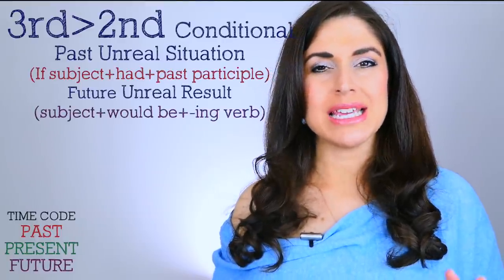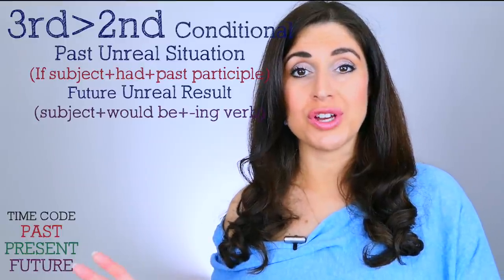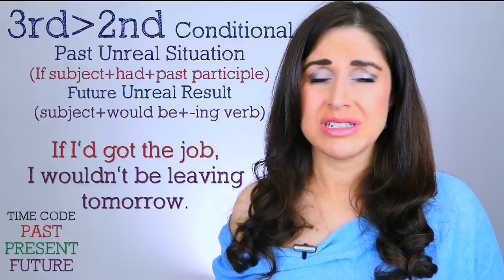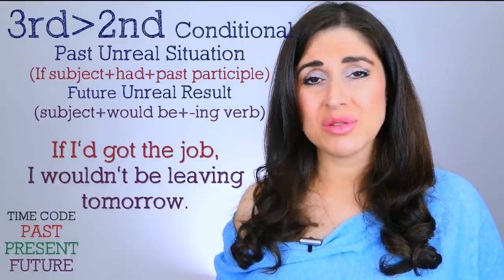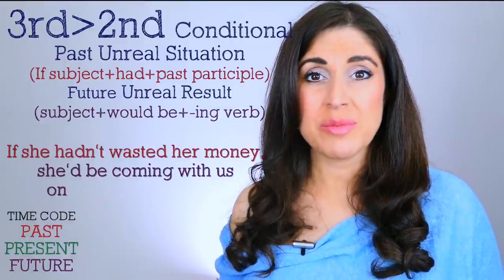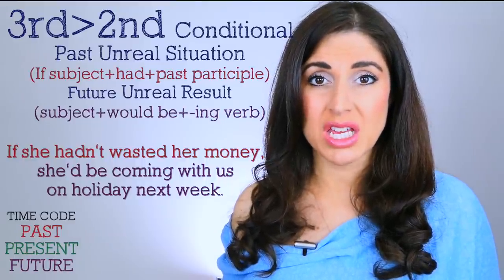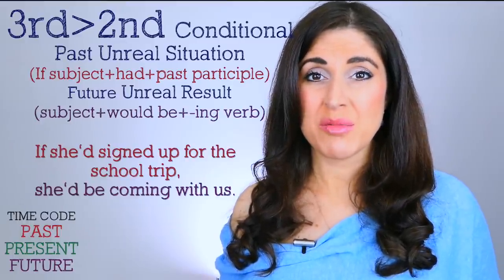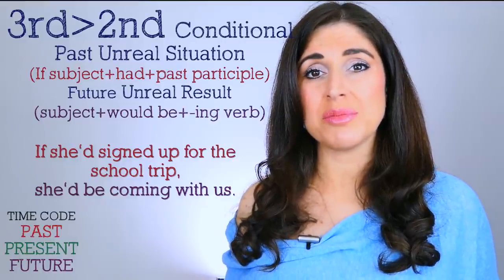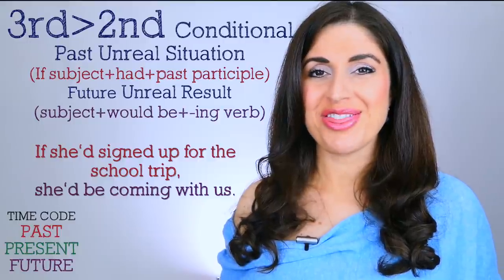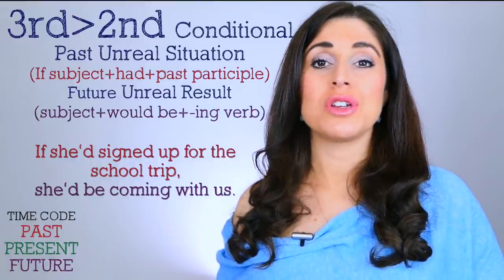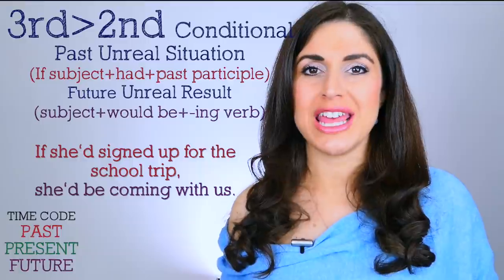Sticking with a past start — third conditional — but mixing it up and referring to the future. 'If I'd got the job, I wouldn't be leaving tomorrow.' 'If she hadn't wasted her money, she'd be coming with us on holiday next week.' 'If she'd signed up for the school trip, she'd be coming with us.' So that's third and second, referring to a future situation that would have been different if you'd made another decision in the past.